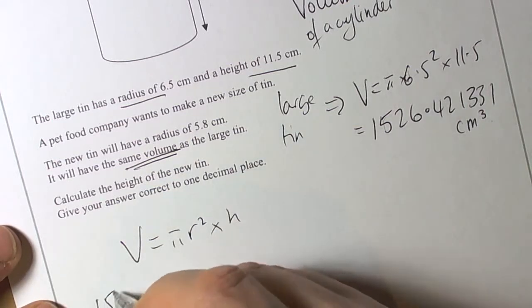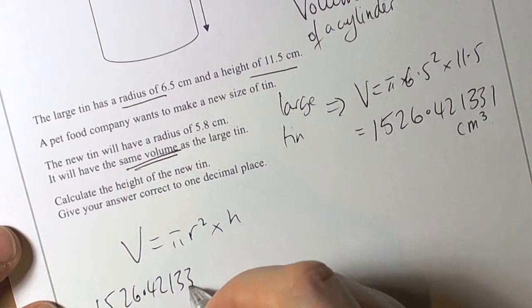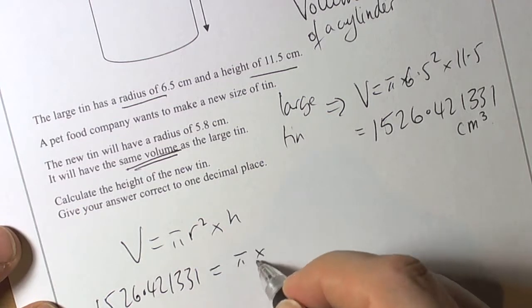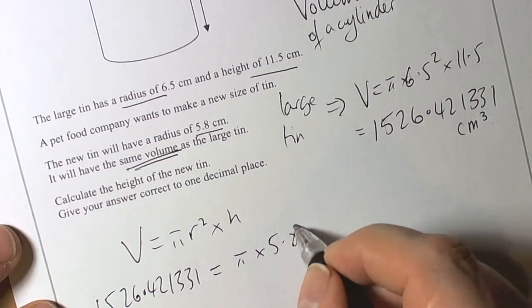They've told us the volume is going to be the same. So 1526.421331 must equal π times... Well, the new tin has to have a radius of 5.8. So we're going to times by 5.8.